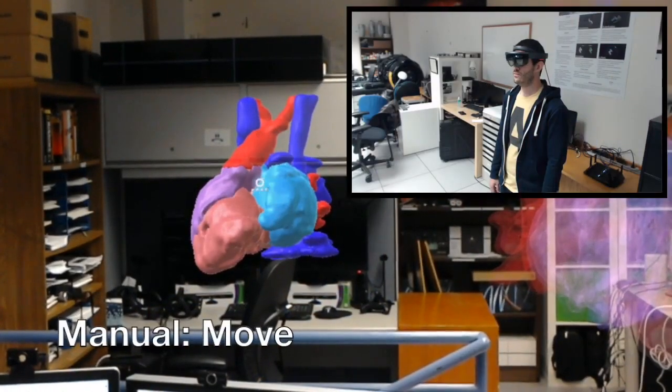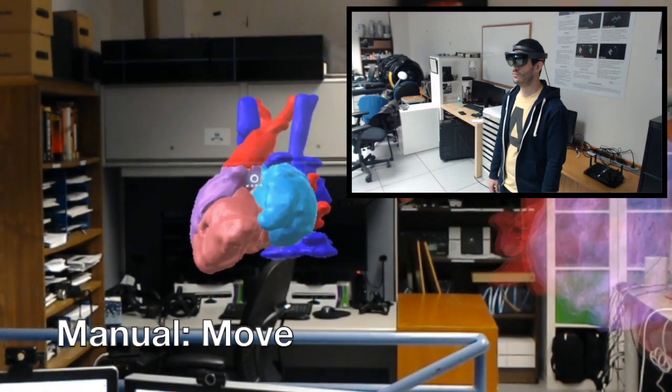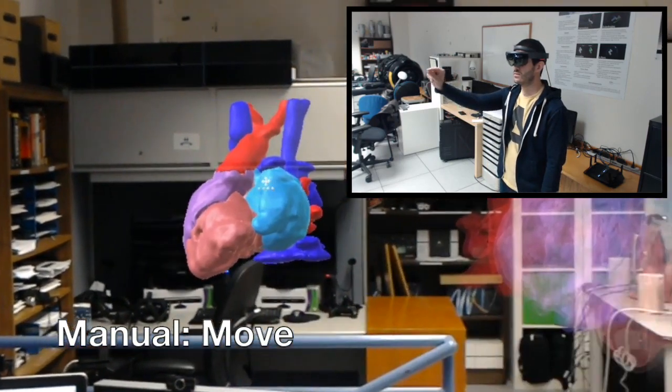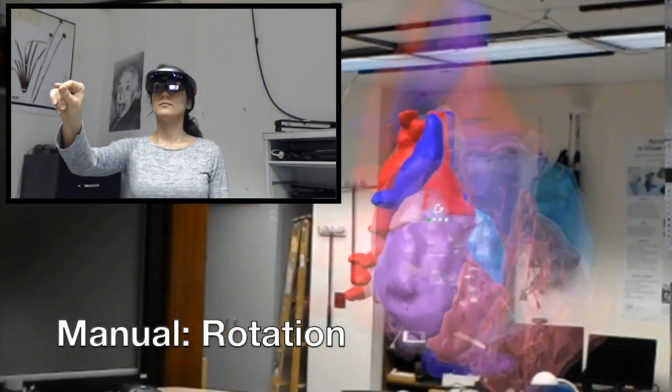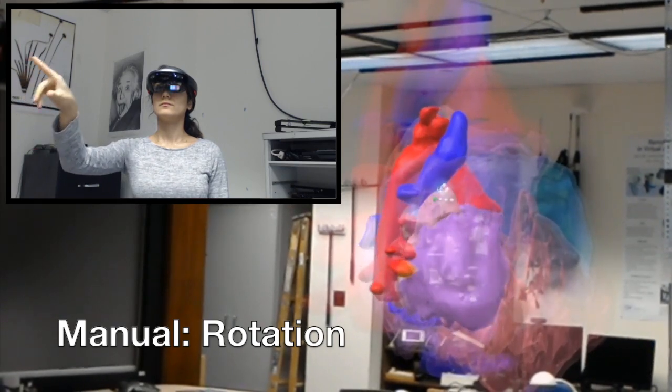For example, in translation mode, hand motion in a certain direction will translate the model towards that direction. Rotation can be about any axis in a plane parallel to the screen or an axis from the model center to the user's head.